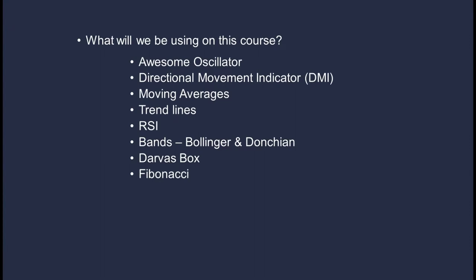In the next few parts of section three we're going to look at: the awesome oscillator, directional movement indicator, moving averages, trend lines, the relative strength indicator, bands such as Bollinger and Donkian, the Darvas box — which you might not have heard of — and the very popular Fibonacci.